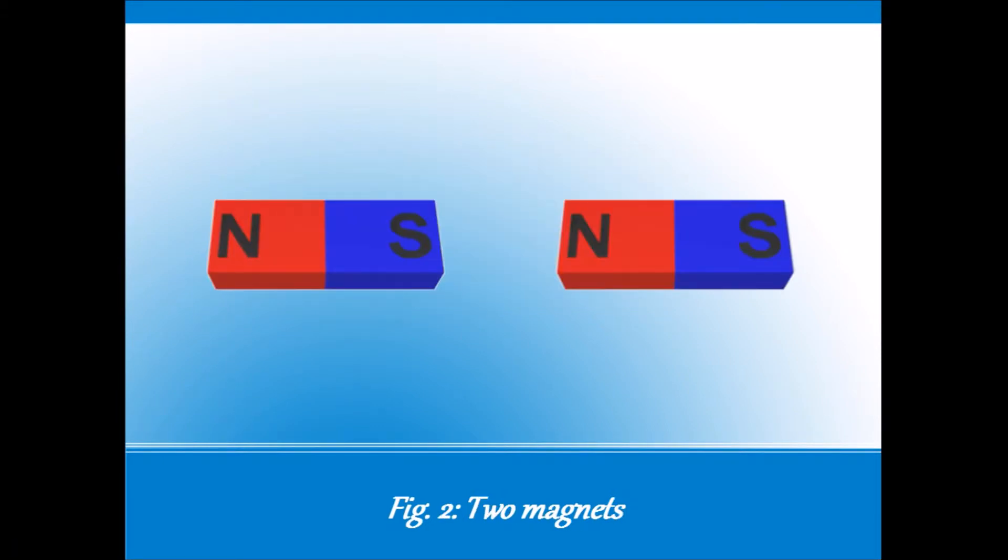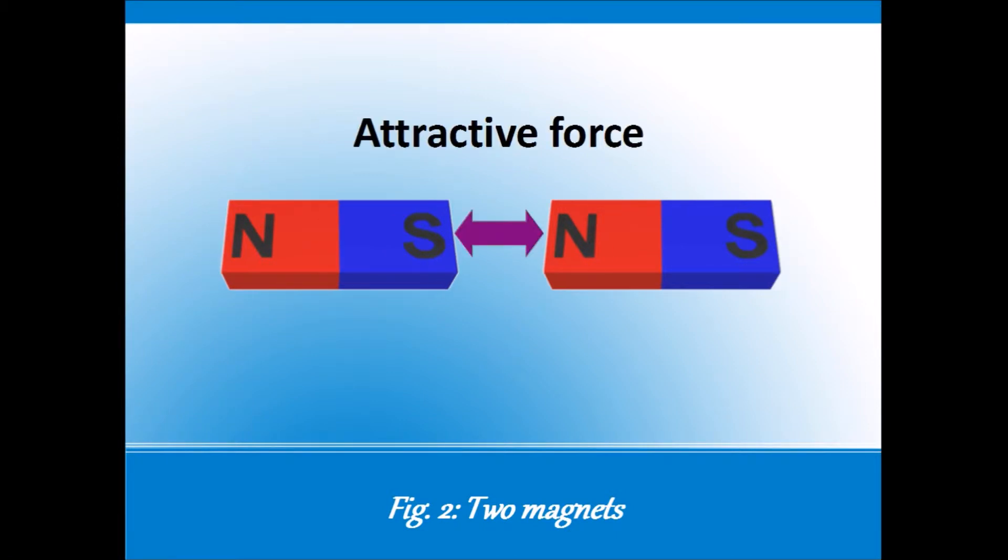As the old saying goes, opposites attract. Here the south pole of one magnet is facing the north pole of the other. South is the opposite of north, so the two feel an attractive force. I don't mean attractive as in good looking, they just get very close together. We say there's a force between the magnets which brings them together.